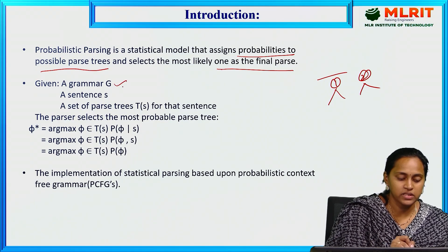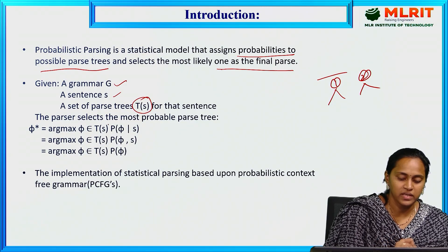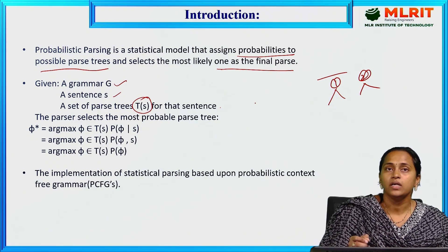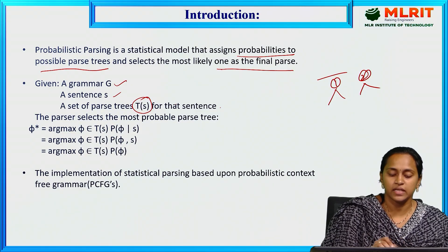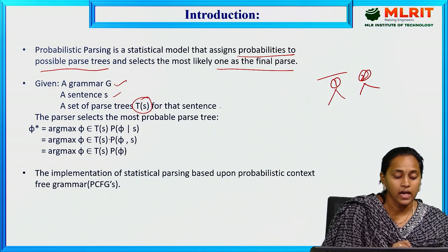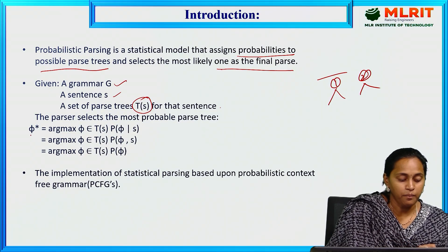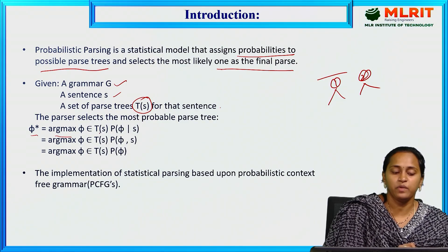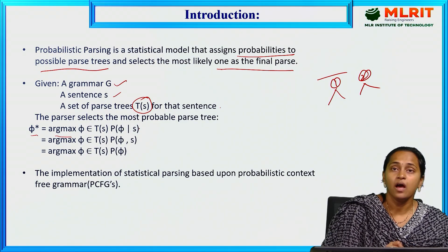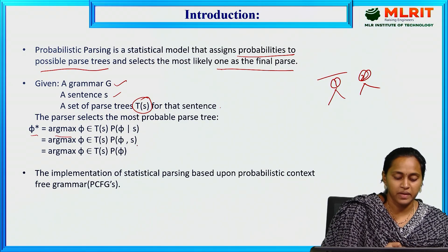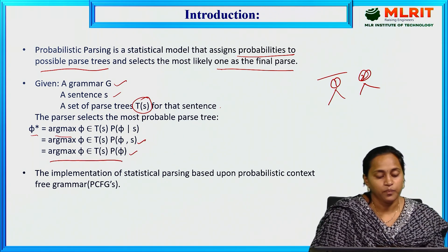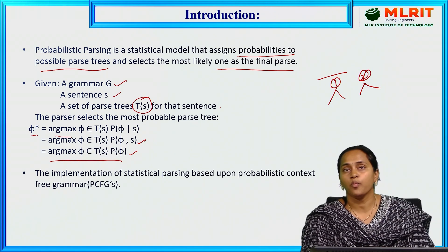Given a grammar G and a sentence S, and a parse tree T of S for the sentence, we can define: Pi-star equals the argument of maximum over Pi belonging to T of S of P(Pi | S). This is the final probable parse tree.